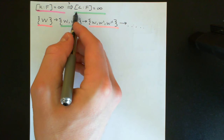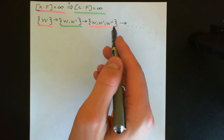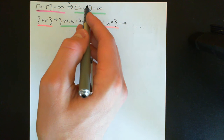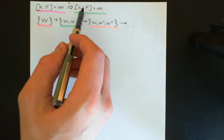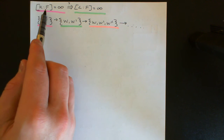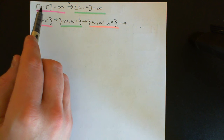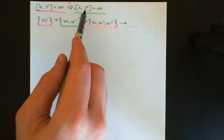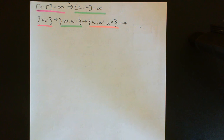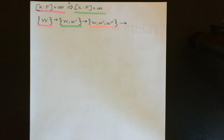They're still going to be linearly independent because it's still the case that the only linear combinations we can take have coefficients in F. So the linear combinations are exactly the same as before — if you couldn't find a non-trivial combination giving the zero vector there, it's also going to be the case over here. So these sets remain linearly independent in the larger field L viewed as a vector space over F.